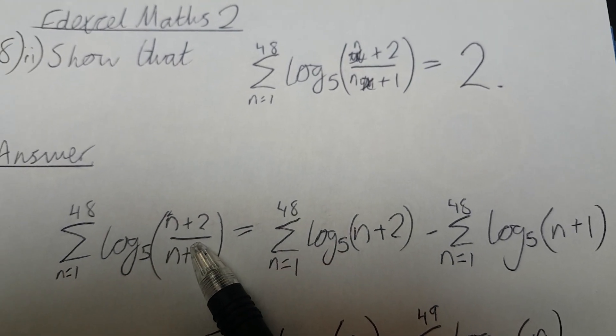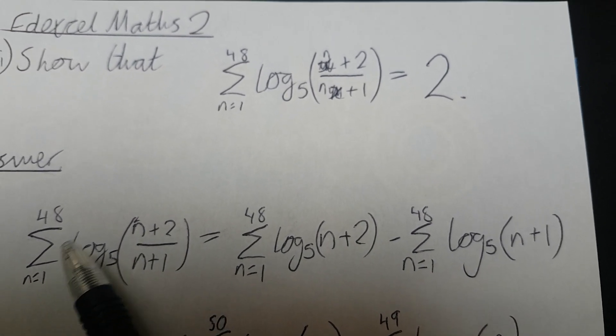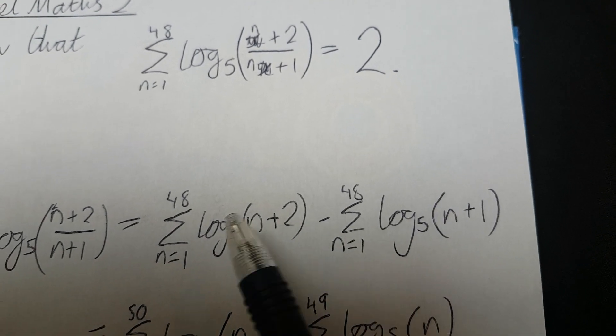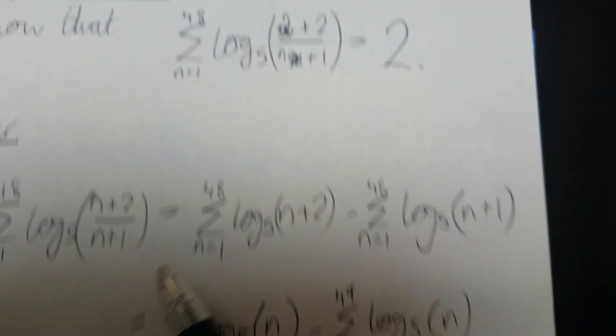And because you've got a division here, you can split it using the log rules. And you can split it inside the series, or inside the sum, but then you can also split it outside the sum. So you've got this, and this, and this is a minus because there's a divide here.